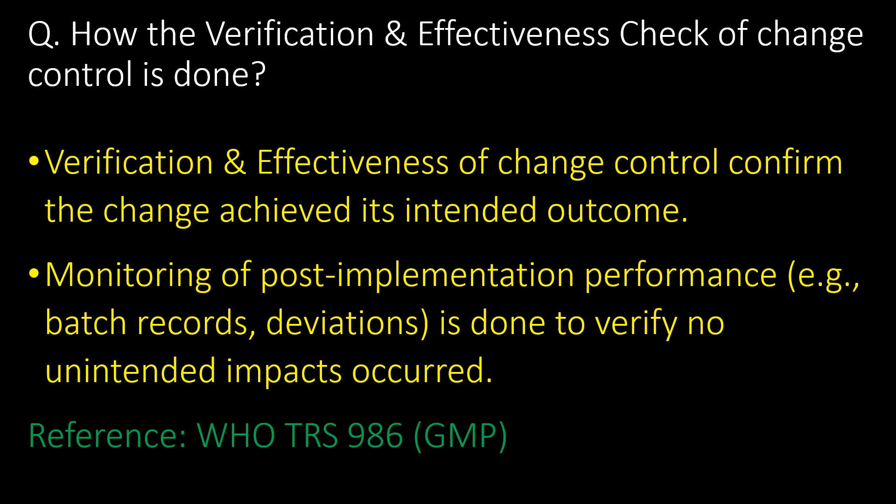How is verification and effectiveness check of change control done? Verification and effectiveness check confirms the change achieved its intended outcome. Monitoring of post-implementation performance — such as batch records and deviations — is done to verify no unintended impacts occurred. Reference: WHO TRS 986 GMP.